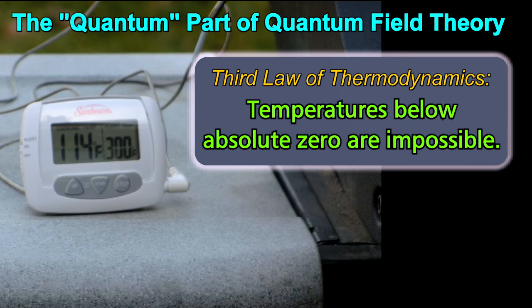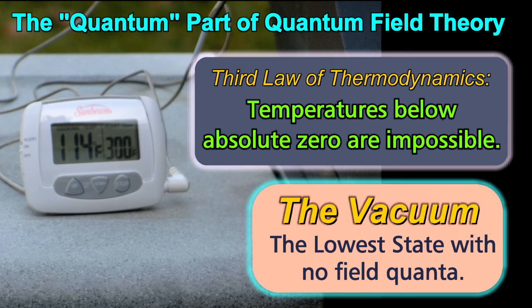The answer to that question is the vacuum. The vacuum is the starting point and it is assumed in quantum field theory. There is always a positive number of quanta in the field. You can't go below absolute zero and you can't go below the vacuum.